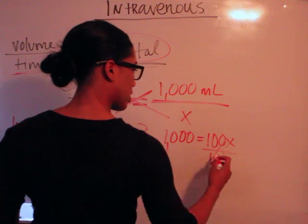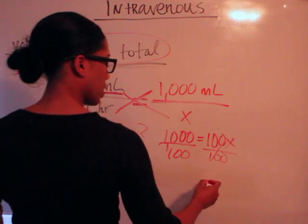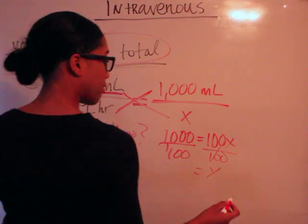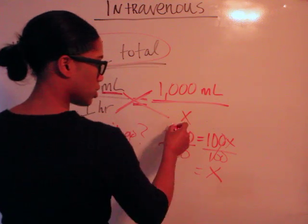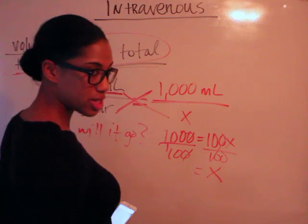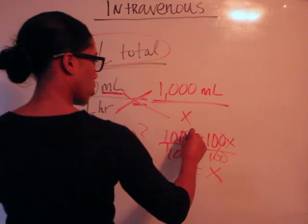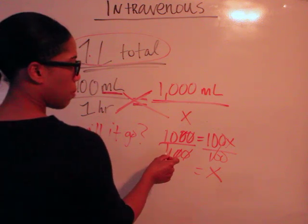So 100, isolate the variable. 100 here equals x. If you have your calculators you can go ahead and do it that way: 100 into 1000. Or you can cross your zeros if you don't already know that 100 goes into 1000 10 times. So if you cross the zeros, that's the shortcut.